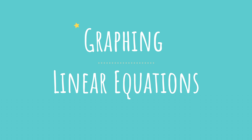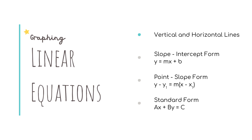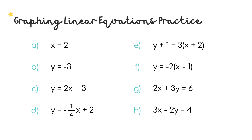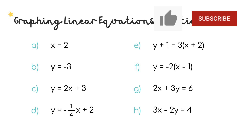Hey everyone, today we're talking about graphing linear equations that are vertical or horizontal in slope-intercept form, point-slope form, and standard form. I'll give you step-by-step directions on how to graph each type of equation. We'll do eight examples together, which are shown here on the screen. Before we get started, subscribe to this channel to stay caught up on the latest math videos and tips.